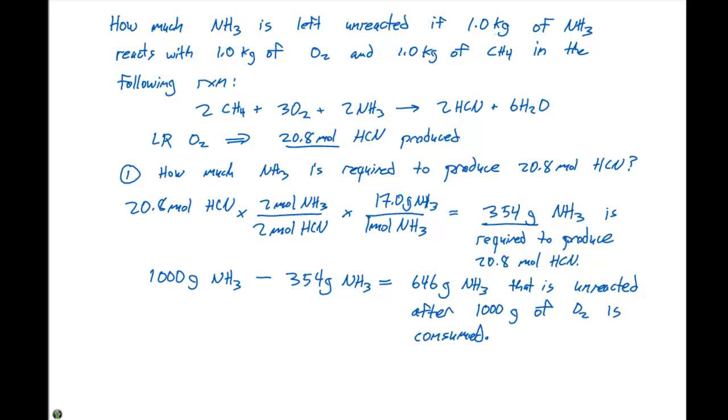We still have 646 grams of the ammonia left after all of the oxygen is used up. We will call this an excess reactant. In this particular problem, oxygen is the limiting reactant, and the excess reactants are NH3 and CH4. We can do the exact same calculation for CH4 to see how many grams of that are unreacted in this particular problem.